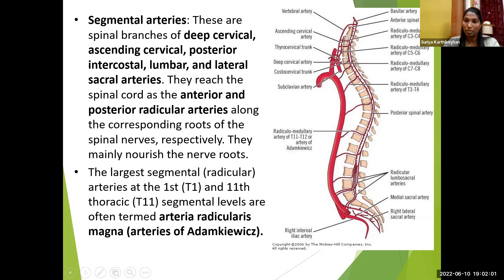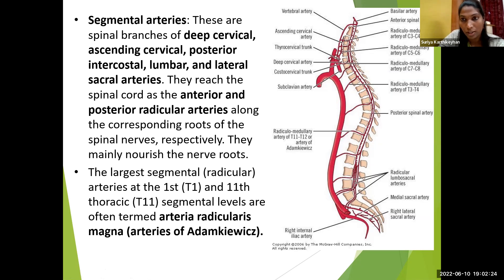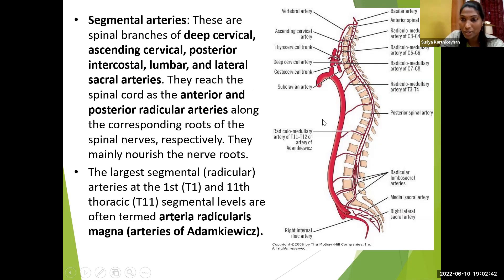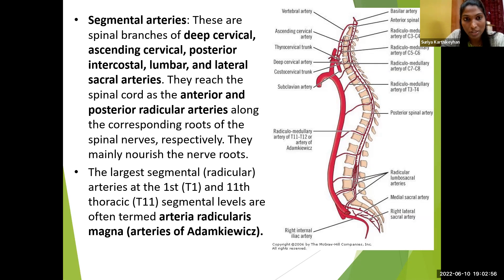Now we can understand the relation between aorta, spinal cord, and paraplegia — the relation between aneurysm and spinal cord paraplegia. The segmental arteries mainly supply the spinal nerves. When the segmental artery is ligated or injured, that part of the spinal nerve lacks blood supply, resulting in paraplegia. We have large segmental arteries at T10 and T11 levels — called the Arteria Radicularis Magna, or the artery of Adamkiewicz. This is an important Viva and PG exam question.